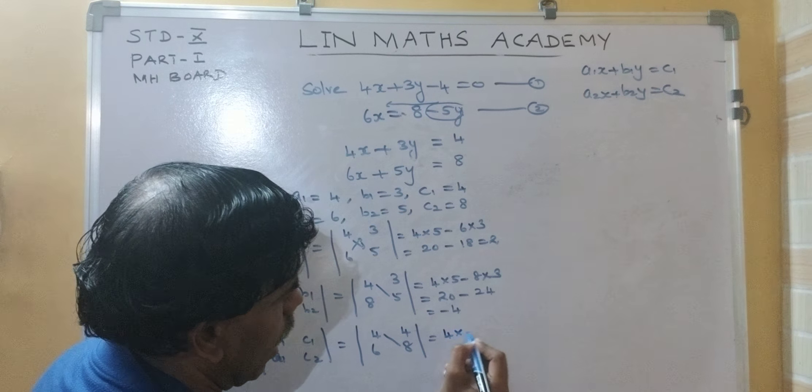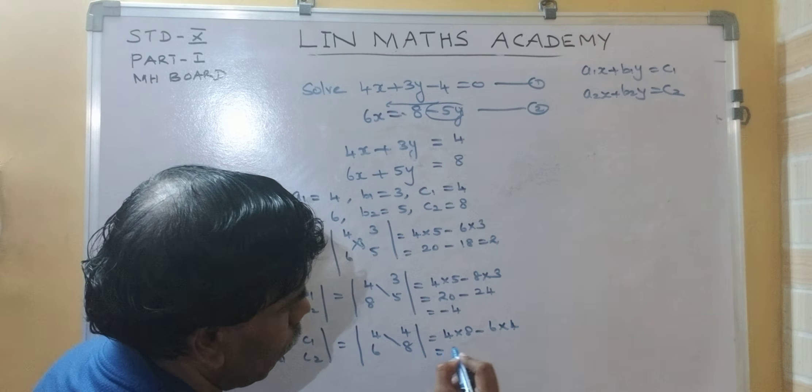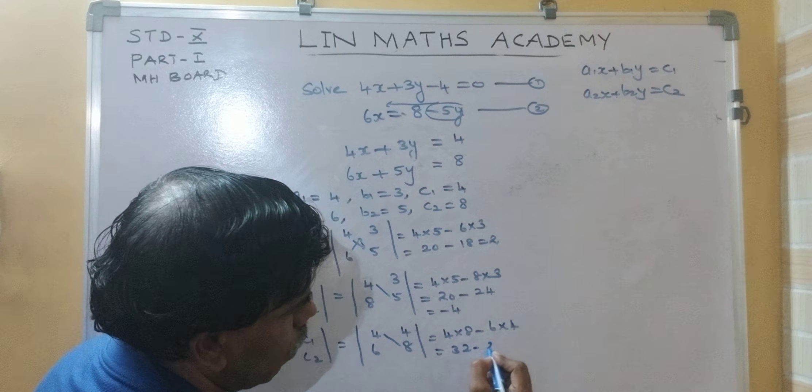4, 8 cross multiply minus 6, 4 cross multiply. 32 minus 24.